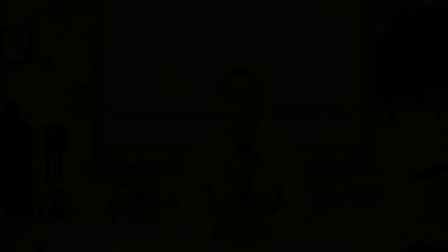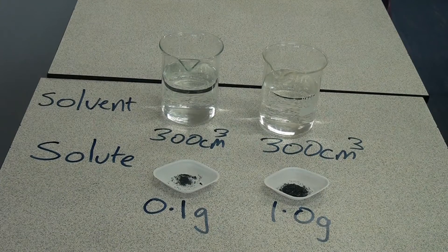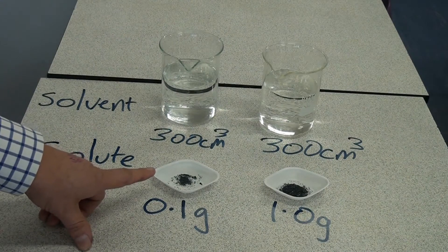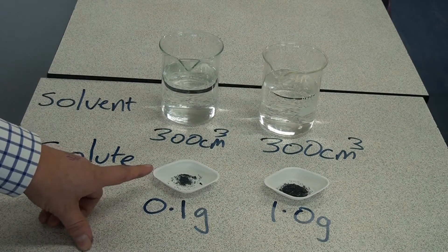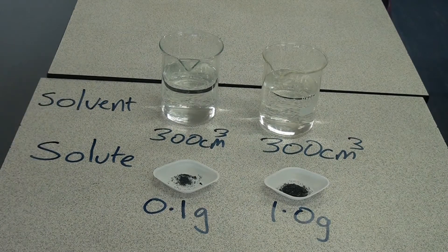First of all, we're going to look at what we actually mean by the concentration of a solution. A solution is always made up of a solid part, which is the solute — here I've got some crystals of potassium permanganate — and the solution is also made up of a liquid part, which is the solvent, in this case water.